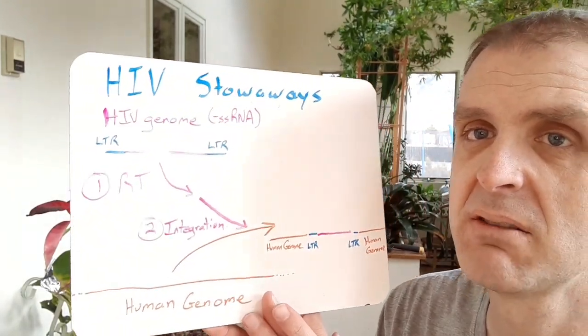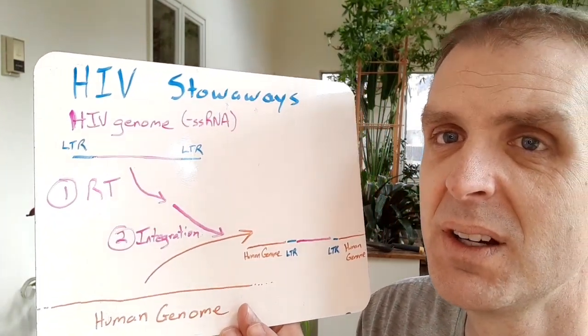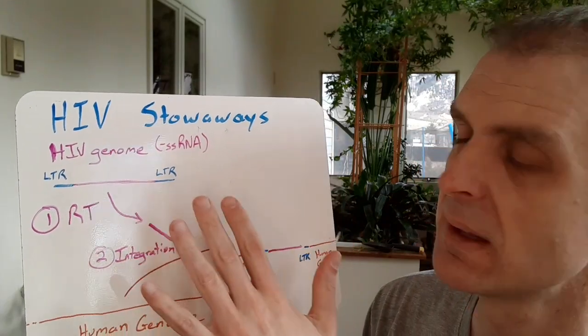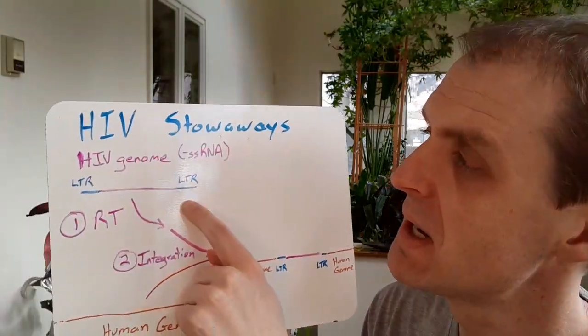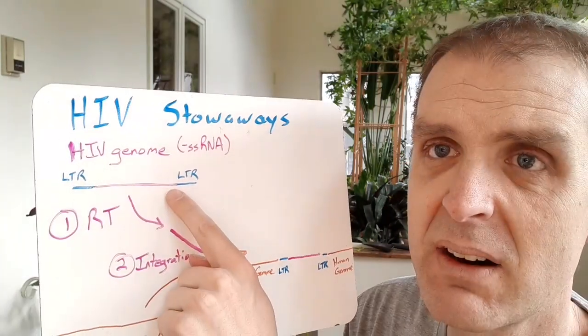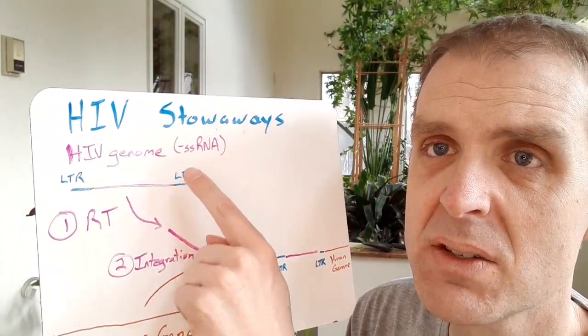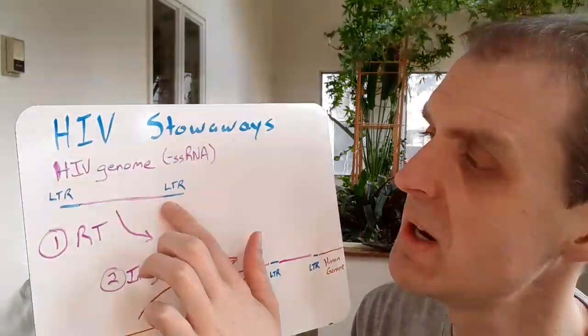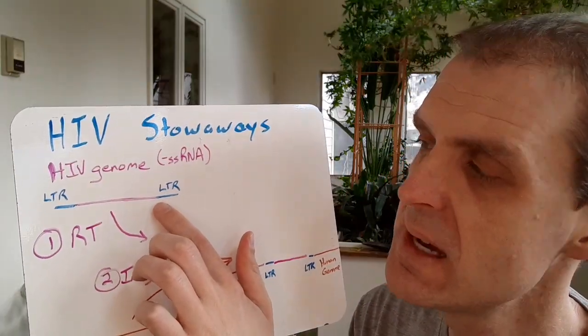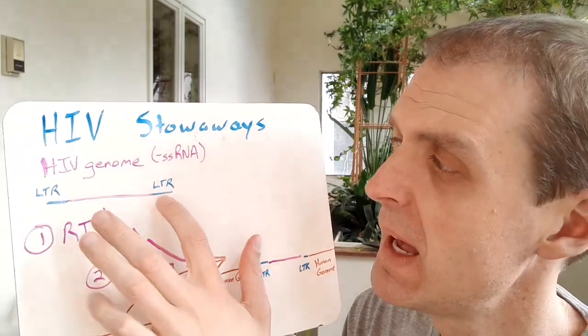A very stripped down version of the HIV life cycle, zooming in one segment. We start out with a single strand RNA negative sense genome for HIV, and then that genome has some sequences at the end that I've colored in blue.